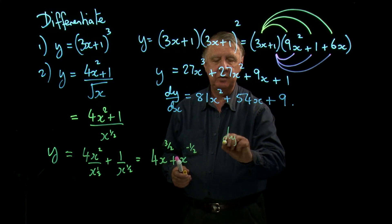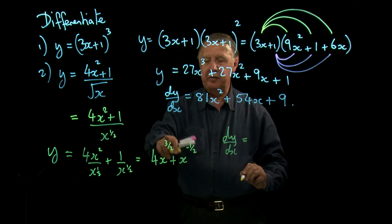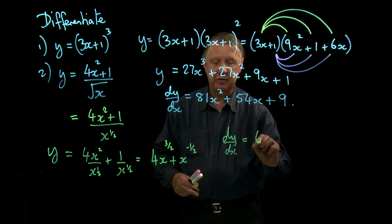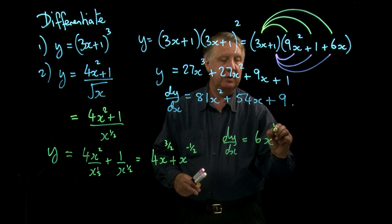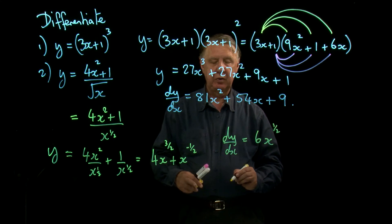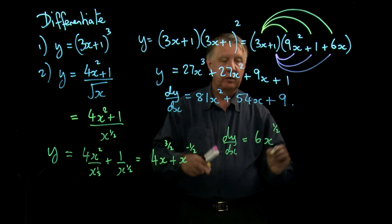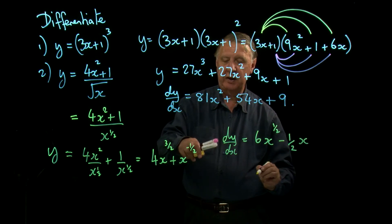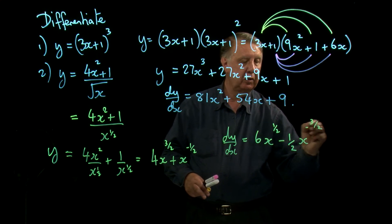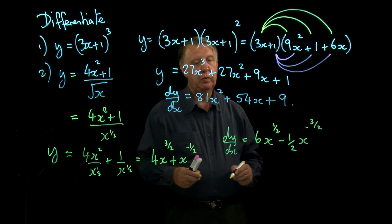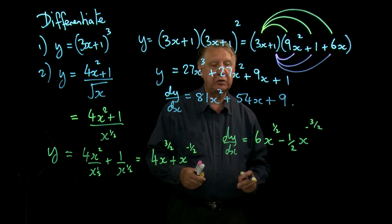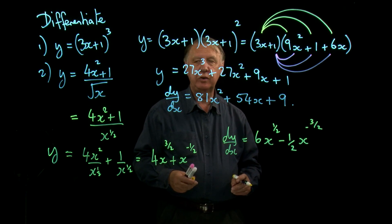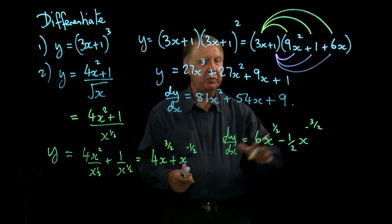Now we're ready to go. Dy by dx. Bring down the 3 over 2. 4 times 1 and a half is 6. Take 1 away from that is a half. Bring down the negative 1 and a half. Take 1 away from negative 1 and a half is negative 1 and a half. So there we've got dy by dx. Not much point in doing anything else with that. I'm quite happy with that as the answer.